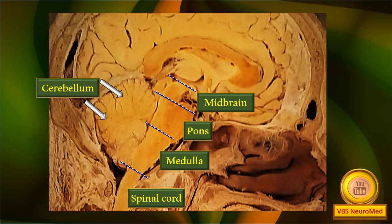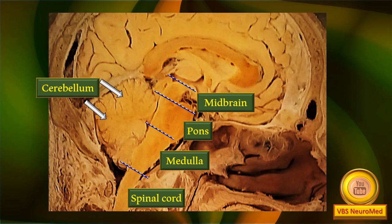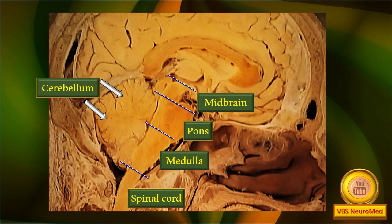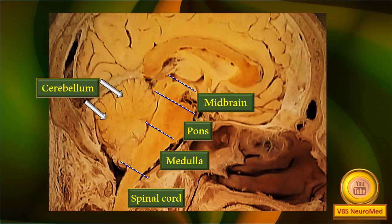There are four dotted lines blinking, and that whole area is the brain stem, which continues below with the spinal cord. Right behind the brain stem, marked by two white arrows, is the cerebellum. Between the dotted arrows, there are clearly marked areas: midbrain, pons, medulla, and outside the cranial cavity, the spinal cord.